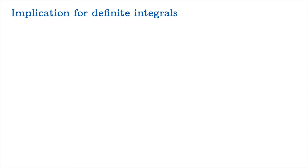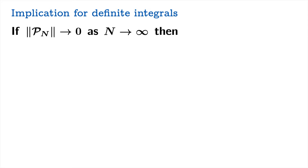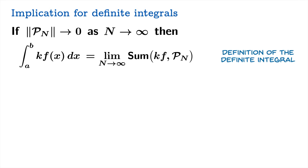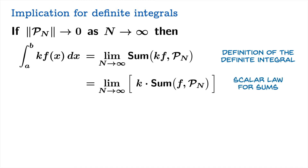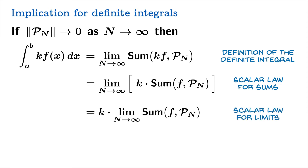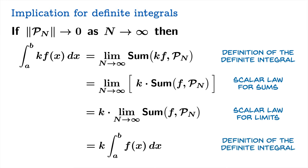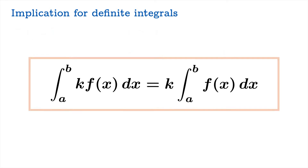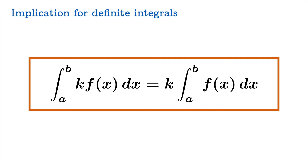Now what does this mean for definite integrals? With a sequence of partitions whose size goes to zero, by definition the integral of k times f of x is a limit of Riemann sums. We can factor k out from inside the Riemann sum — this is the scalar law for sums. Then by the limit law for constants, k comes right out of the limit. And by definition, that remaining limit of Riemann sums is the definite integral of f on the interval from a to b. So the integral of k times f of x equals k times the integral of f of x.